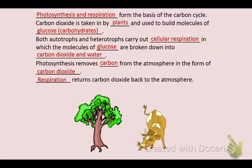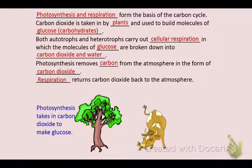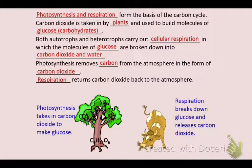As we learned in our last unit, photosynthesis takes in carbon dioxide to make glucose, and in cellular respiration we take in glucose and release carbon dioxide, and then that carbon dioxide goes back to the tree. We call that the circle of life.